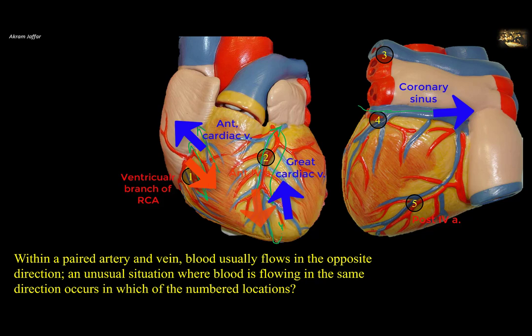Location 3 represents a pulmonary artery, which carries deoxygenated blood from the heart to the lung — hence the blue color. The pulmonary vein carries oxygenated blood from the lung to the left atrium of the heart. It is colored red because it carries oxygenated blood, but it is called a vein because it carries blood toward the heart. Vessels that carry blood away from the heart are called arteries, whether they contain oxygenated or deoxygenated blood. At location 3, blood also flows in opposite directions.